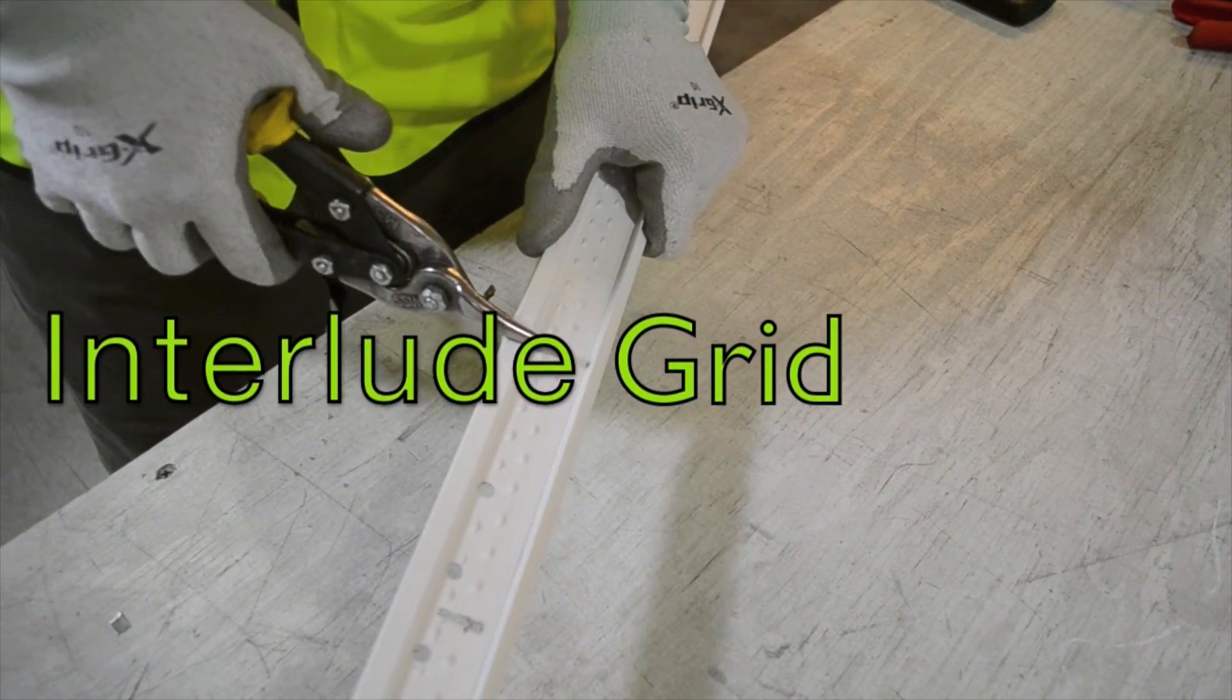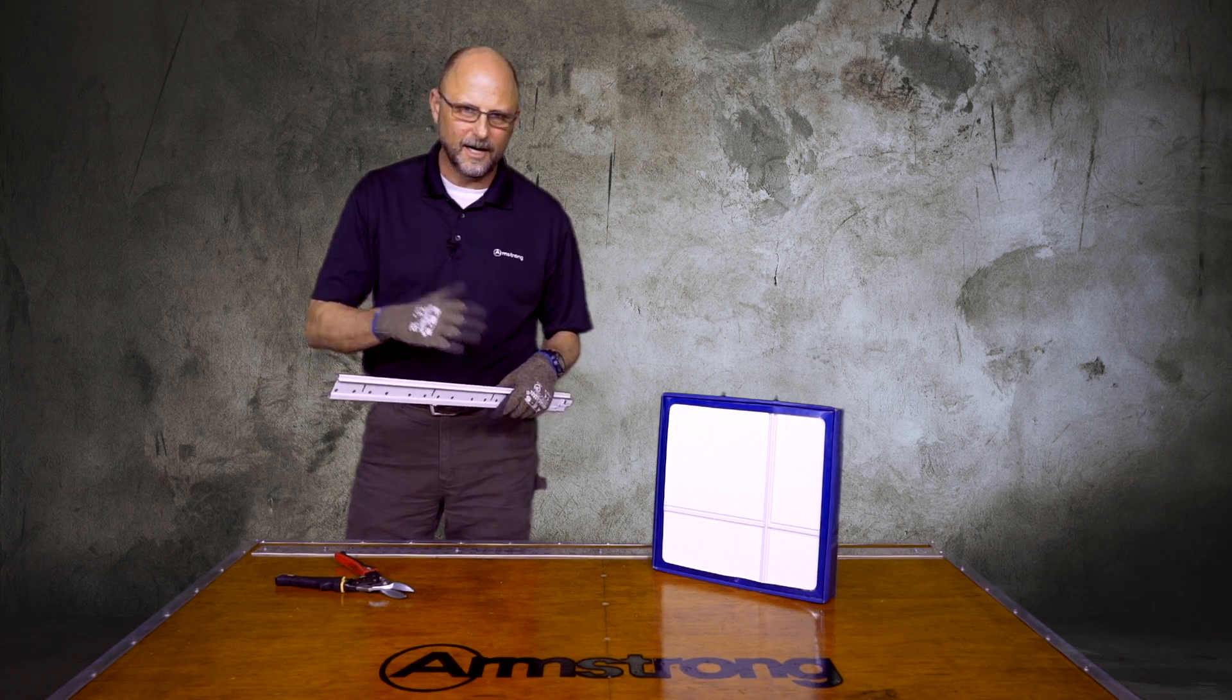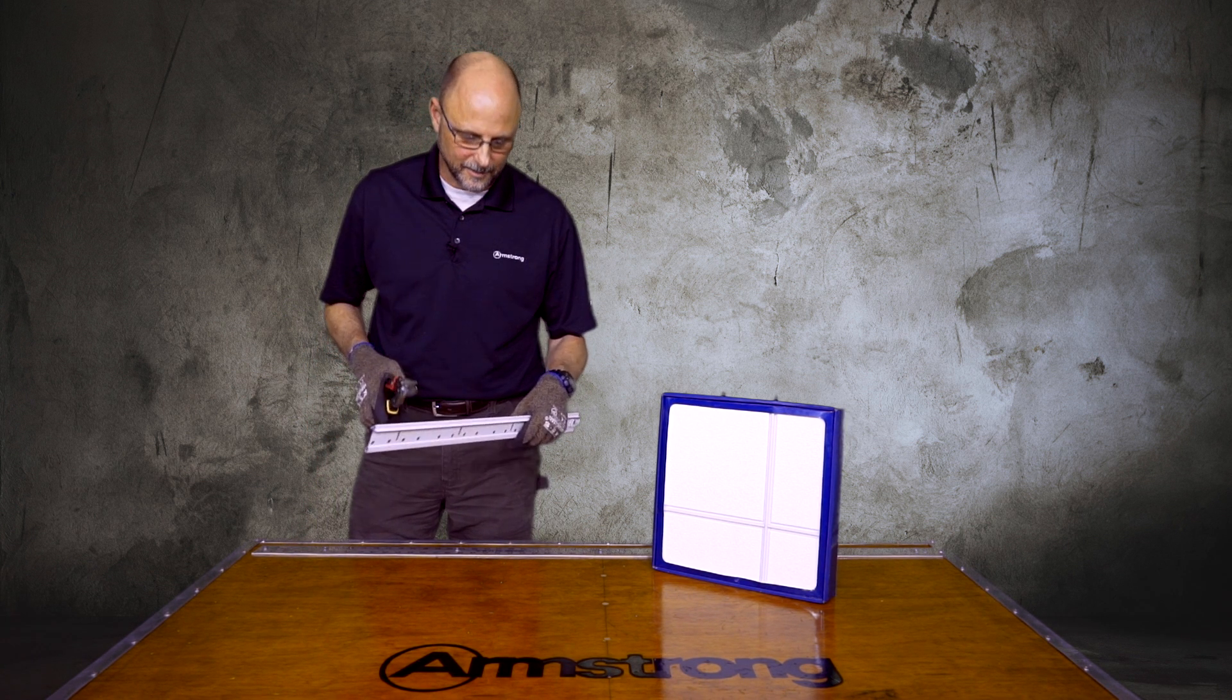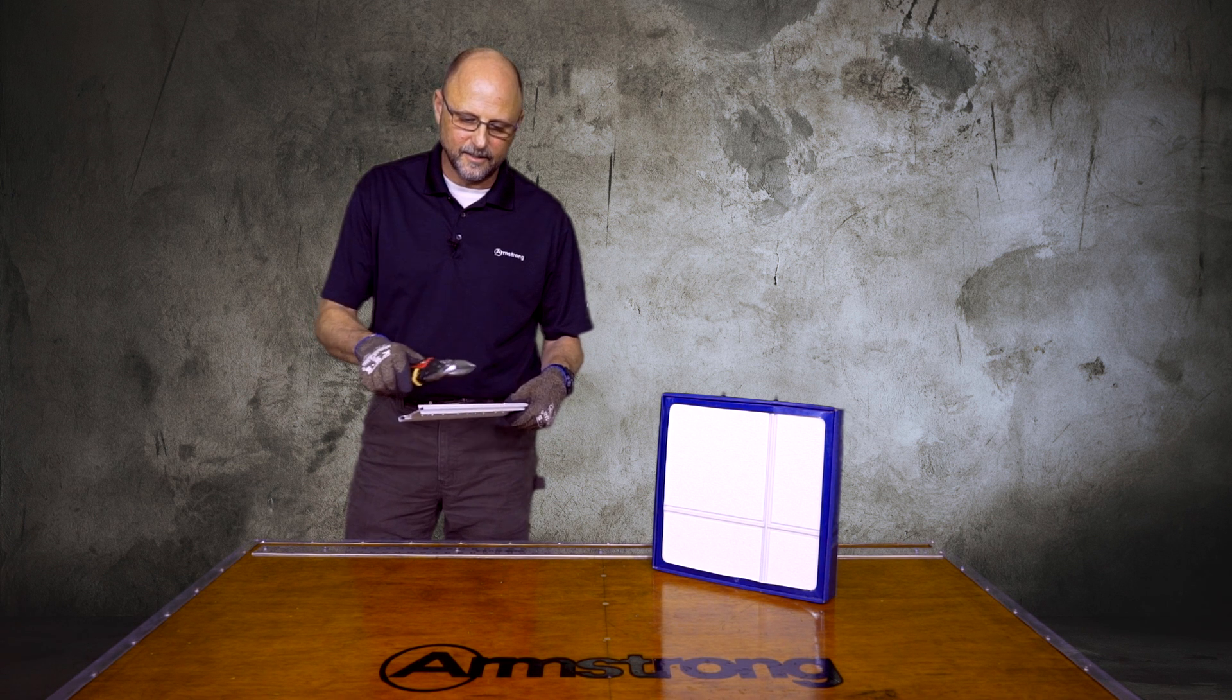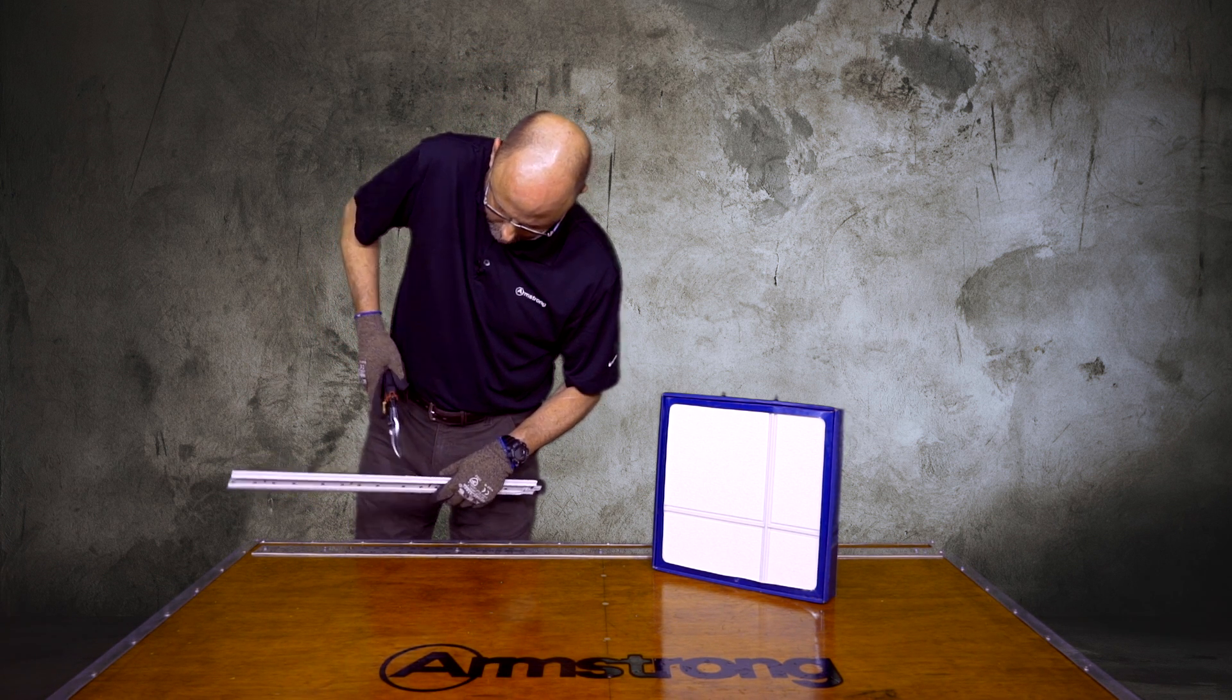The big question that always comes up with dimensional T products is how do you cut them, because they're not a standard exposed T system. The answer is very easily. I'm going to perform three cuts to cut this T to length. I'm going to cut all flanges right here.